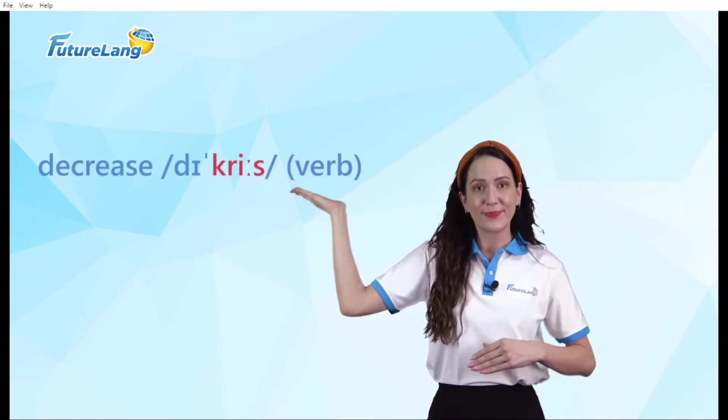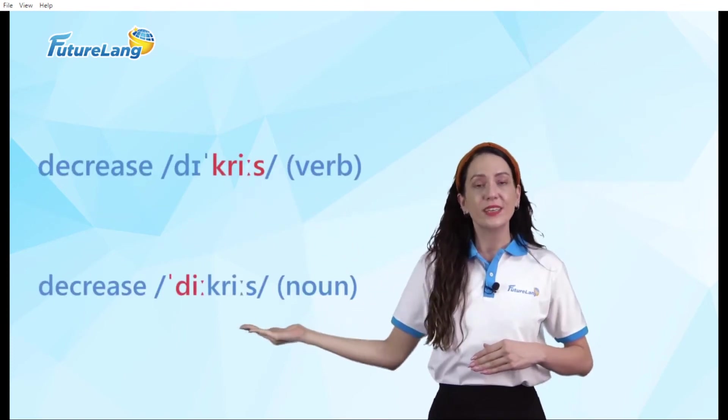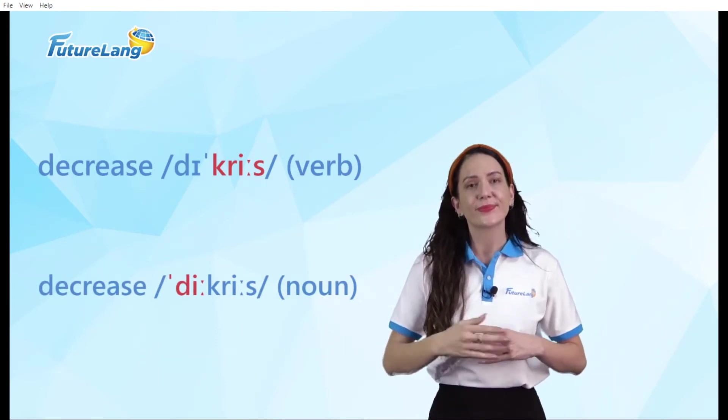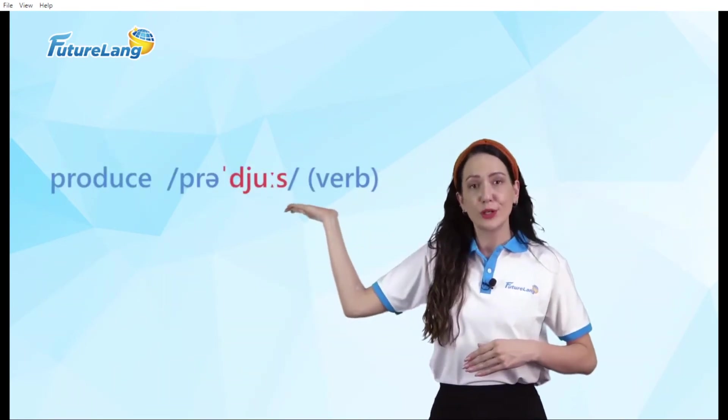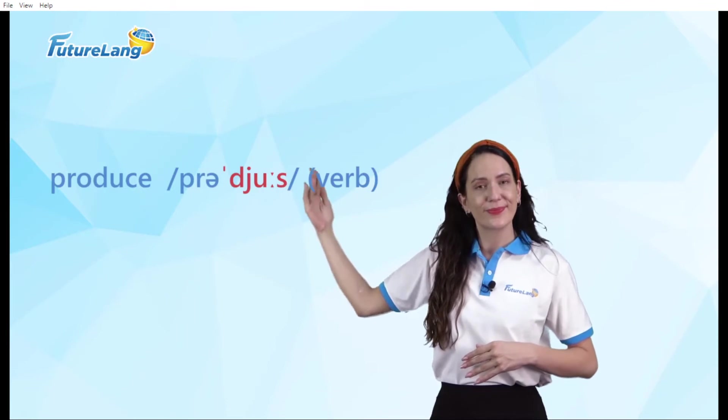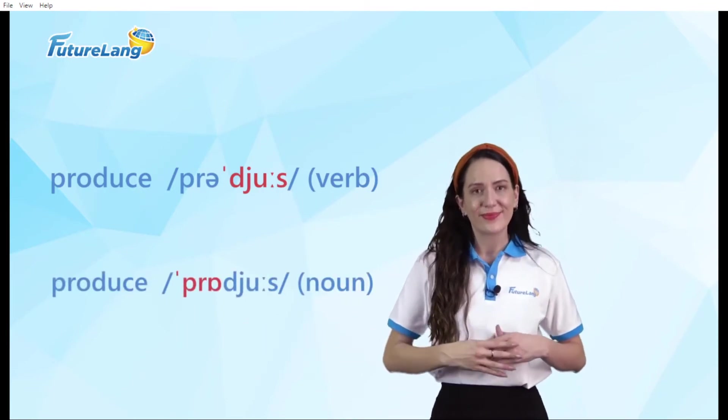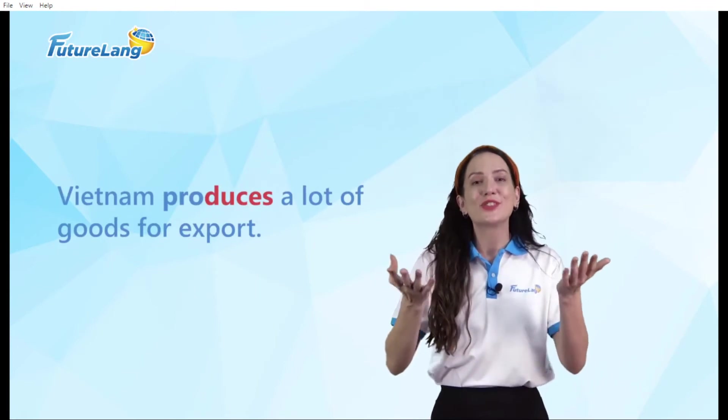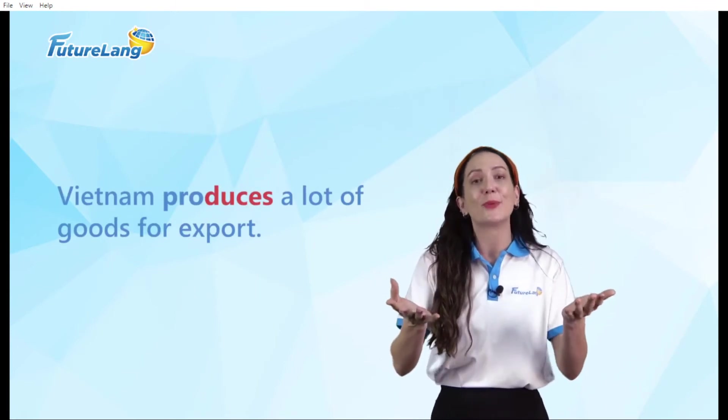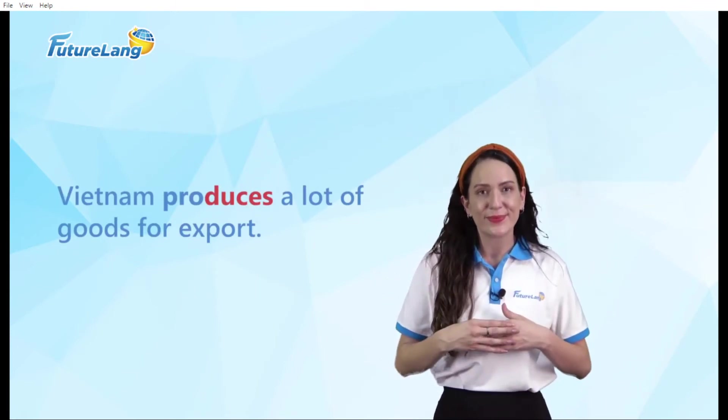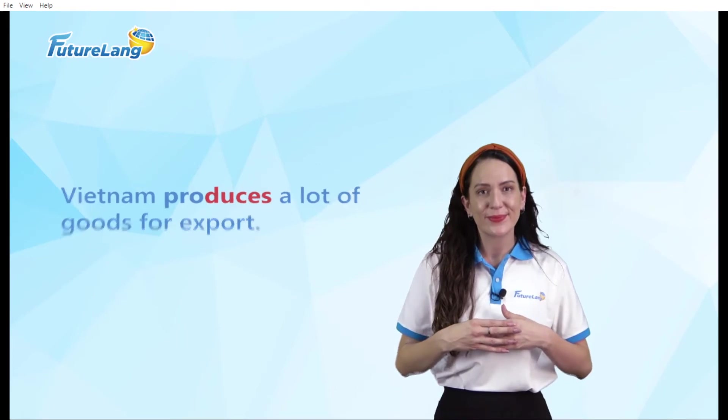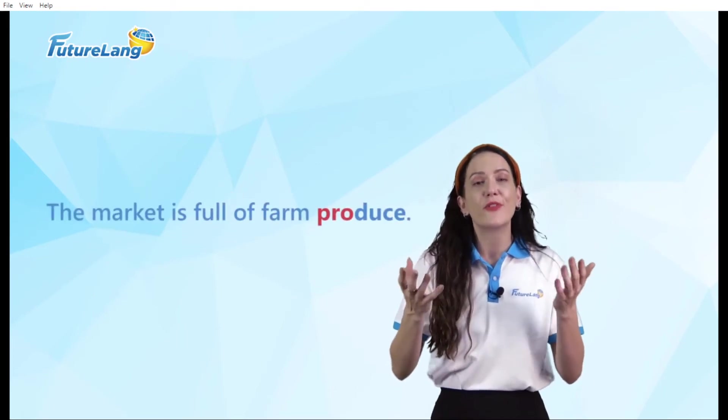Decrease. Decrease. Decrease. Produce. Produce. Produce. Vietnam produces a lot of goods for export. The market is full of farm produce.